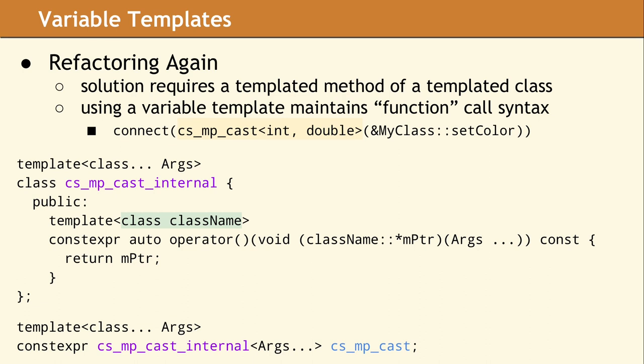Finally, on the last two lines of our example, here is the variable template. The only purpose of these lines is so we can keep the function-like syntax. At first glance, it may not be obvious that CSMPCast has changed from a function name to a variable. When this variable is evaluated, it will instantiate the internal class and then invoke the function call operator.